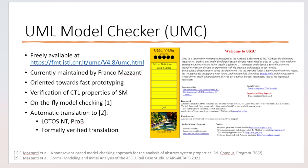The UML Model Checker (UMC) is a tool developed by the FMT Lab at ISTI CNR, freely available at the link in the slide, and currently maintained by Franco Mazzanti, one of the authors and main developer. UMC is oriented towards fast prototyping of state machines when models are in early stages and not too large. It features model checking of a dialect of CTL properties, uses on-the-fly model checking with state space generated up to a certain depth, and its semantics is given by the construction of a doubly labeled transition system.